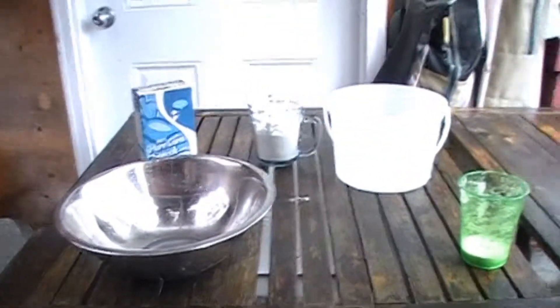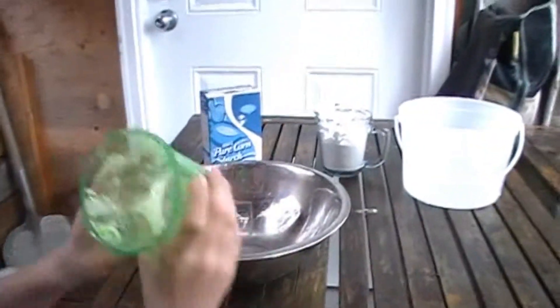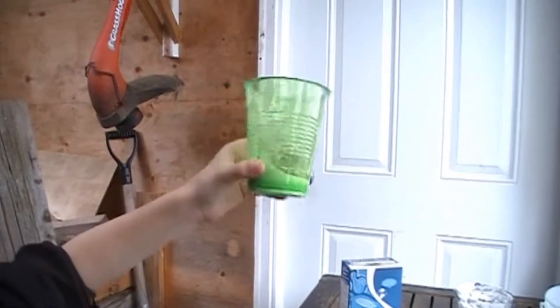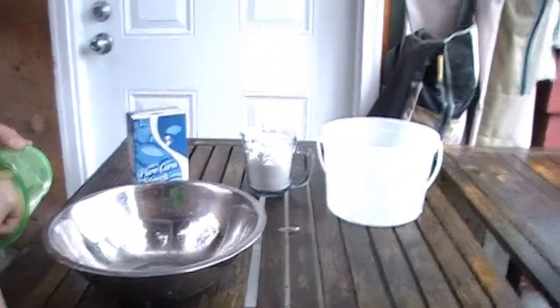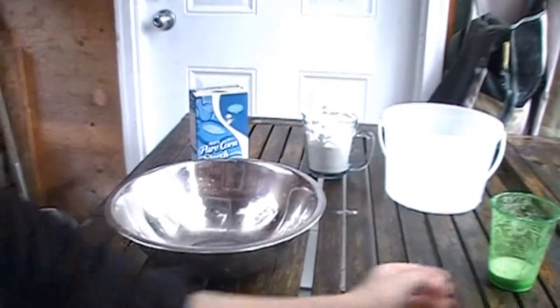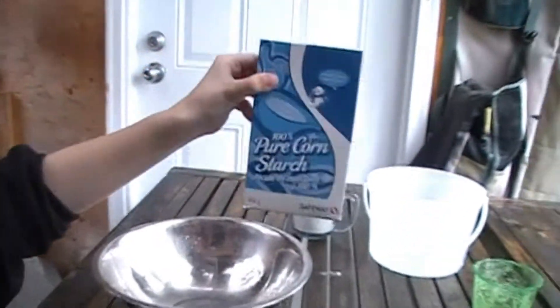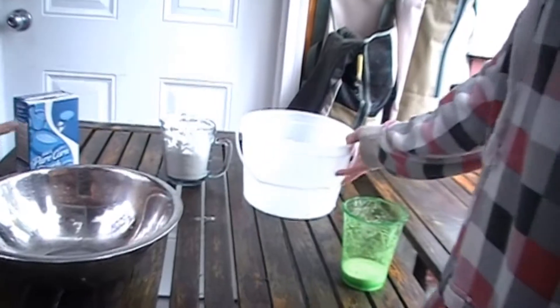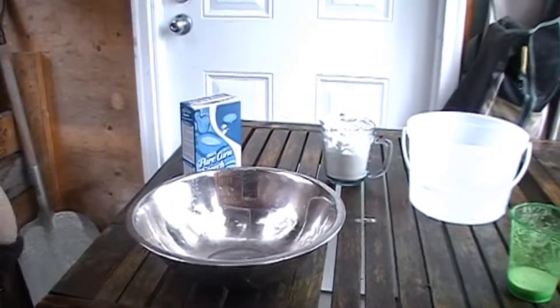Okay, today we're going to make oobleck and it's going to sort of turn out to look like this. It's like a solid but a liquid at the same time. What you need to do is take two parts cornstarch and one part water, so it's pretty much like if you have two cups of cornstarch you need one cup of water.